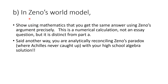Then, Part B: I want you to think about Zeno's world model. Show, using mathematics, that you get the same answer using Zeno's argument precisely back at him. This is a numerical calculation — it's not an essay question. It is distinct from Part A. Said another way, you are analytically reconciling Zeno's paradox, where Achilles never caught up, with your high school algebra solution where he did.